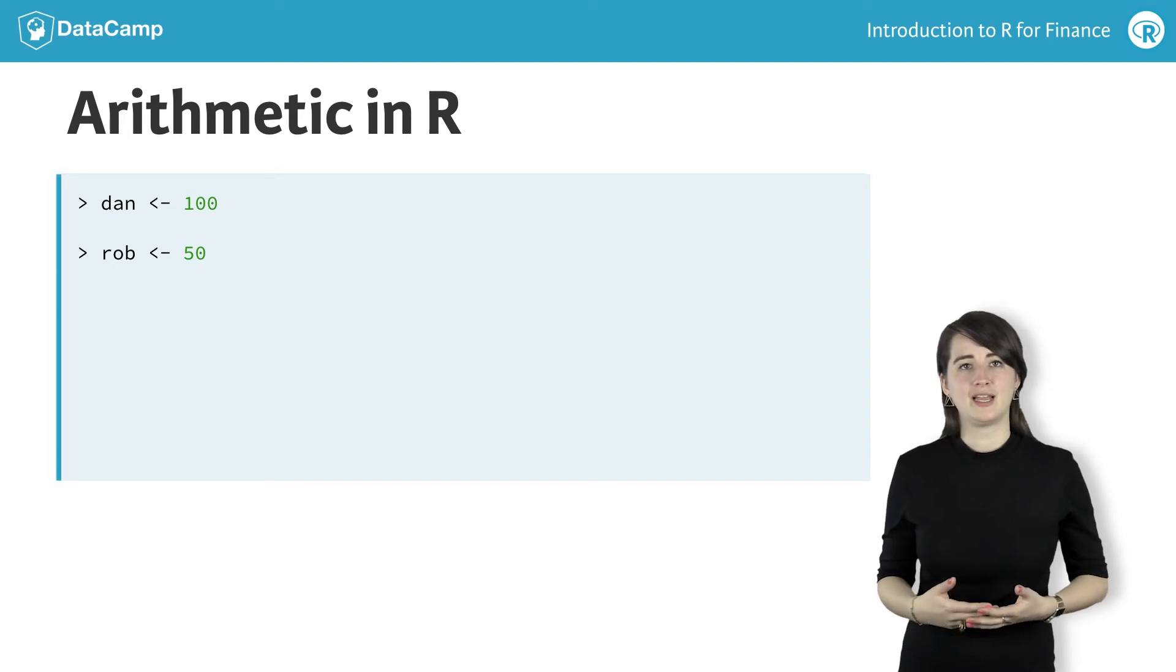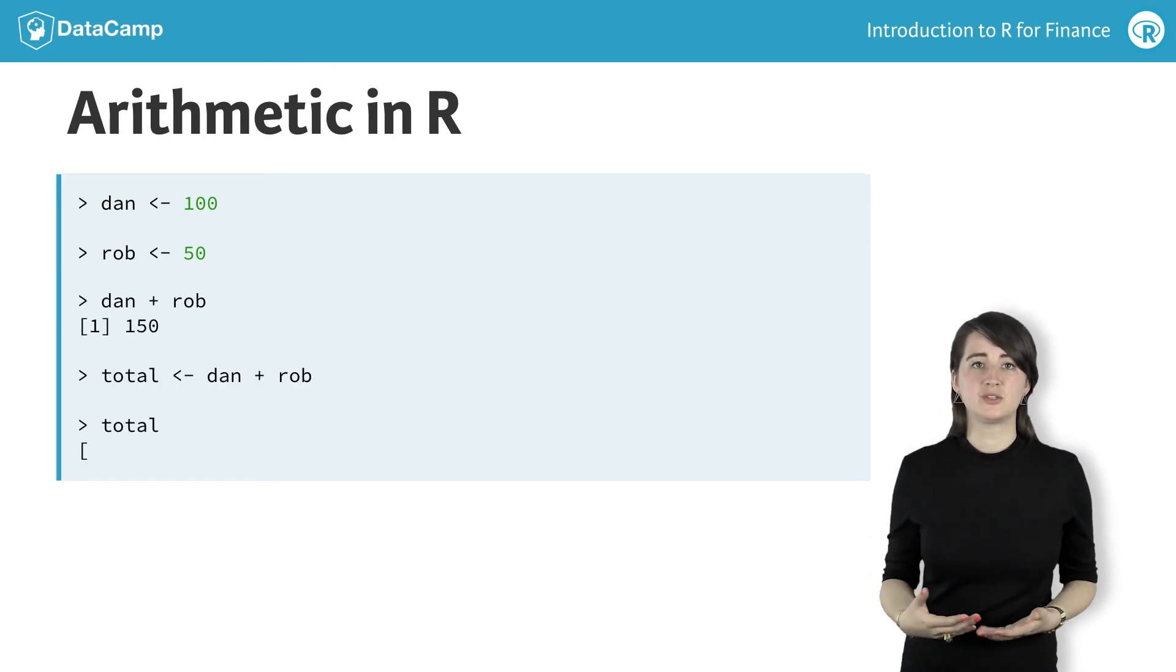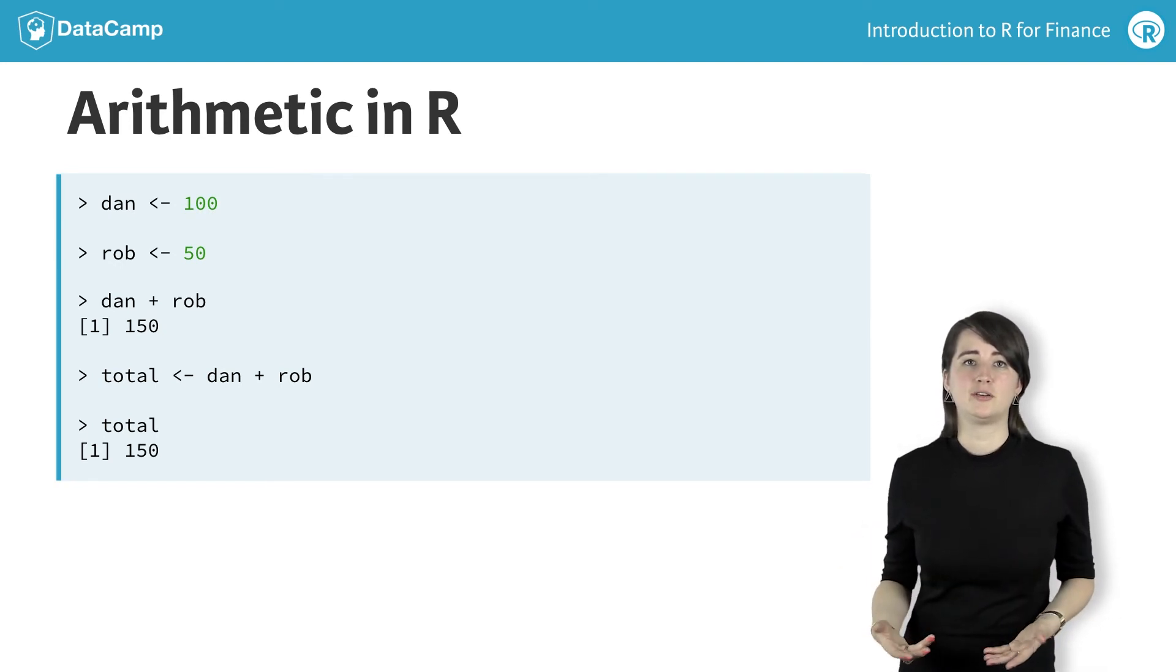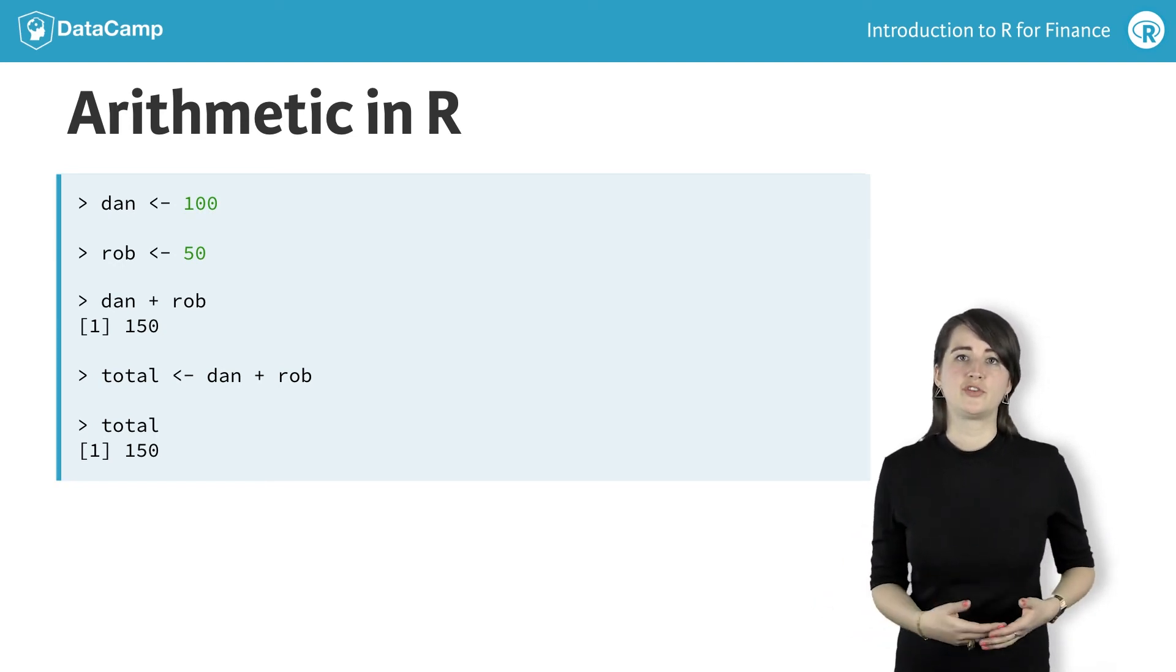Suppose you want to calculate the total amount your two friends owe you. Luckily for you, in R you can perform calculations with variables. To calculate the total, just type Dan plus Rob. You could even assign this value to a new variable, total, to use later.